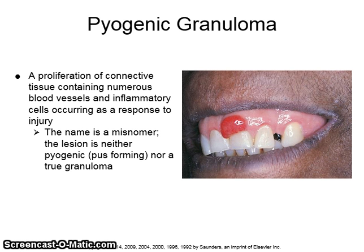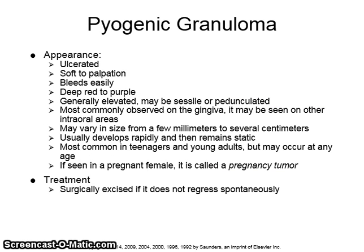A pyogenic granuloma is a proliferation of connective tissue containing numerous blood vessels and inflammatory cells, occurring as a response to injury. The name is a misnomer, as the lesion is neither pyogenic (pus-forming) nor a true granuloma. The appearance is ulcerated, soft to palpation, easily bleeds, deep red to purple in color, generally elevated, and may be sessile or pedunculated. It is most commonly observed on the gingiva but may be seen in other intraoral areas, varying in size from a few millimeters to several centimeters. It usually develops rapidly and then remains static.